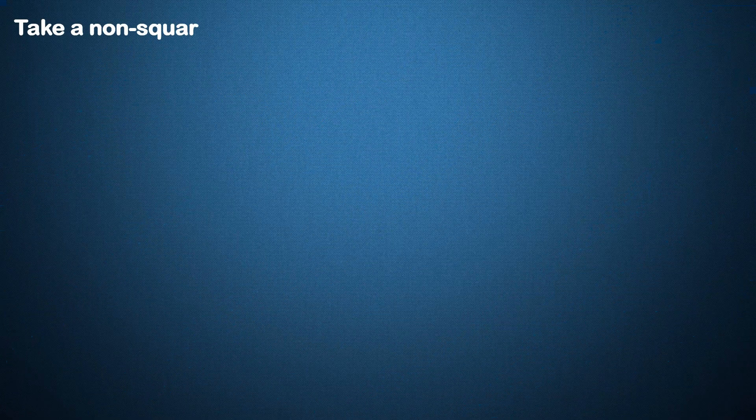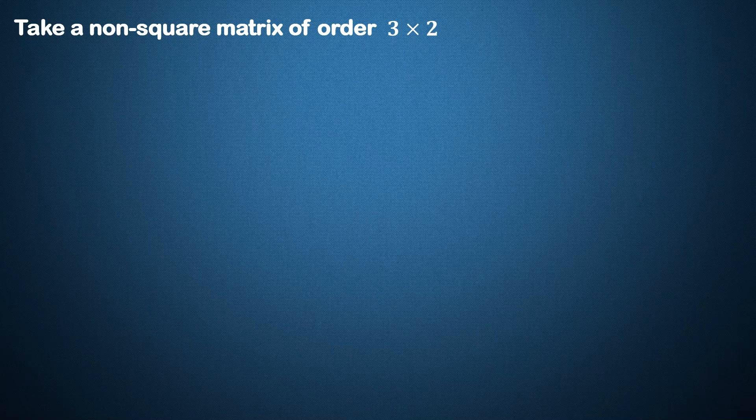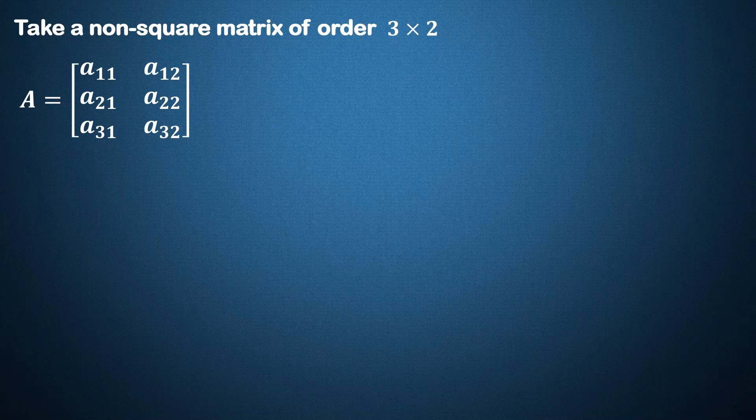We take a non-square matrix of order 3 cross 2. This matrix is a vertical matrix. A vertical matrix is one in which number of rows is greater than number of columns.